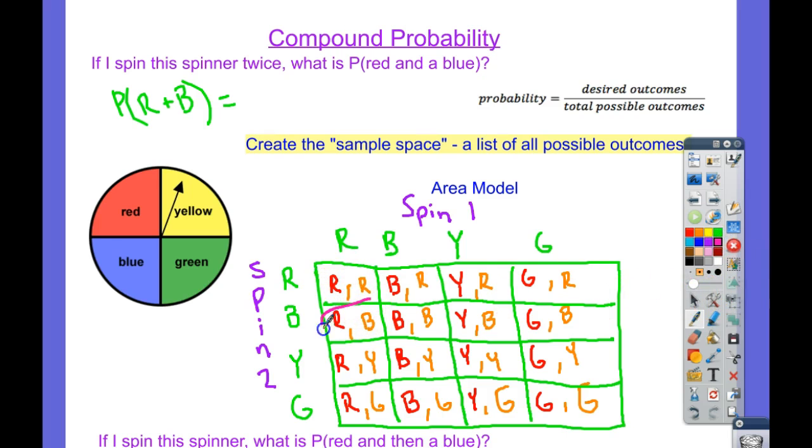Here's a red and a blue. That's red in spin one and a blue in spin two. Are there any more red and a blue? Here's one. Here's a blue in spin one and a red in spin two. So there are two. I don't see any more.